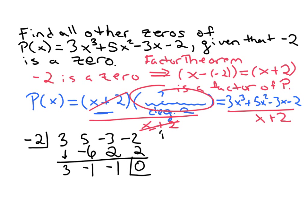So now we know that the polynomial P of x is equal to x plus two times this. Well, this is giving us the coefficients anyway, and we know it's degree two, so it's 3x squared minus x minus one.